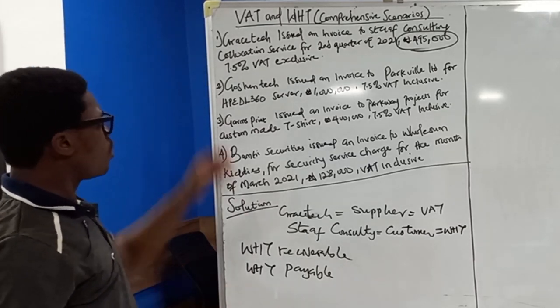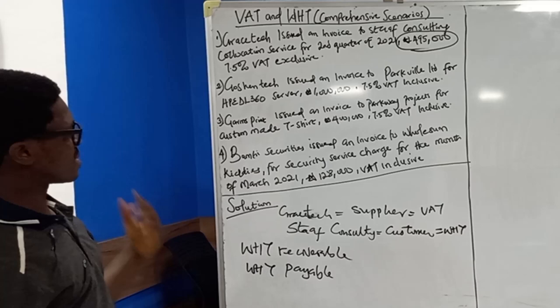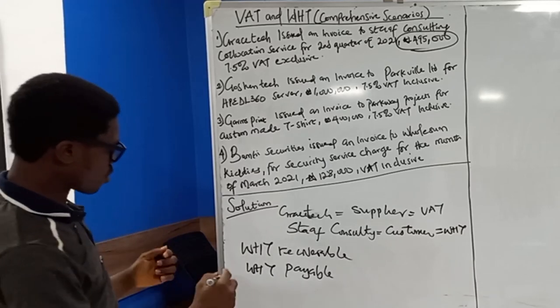Withholding tax recoverable will be opened in the books of the supplier. Why? Because the withholding tax has been deducted from the transaction. At the end of the year, the supplier will use it to defray the tax liability. The withholding tax payable will be credited by the customer pending when the withholding tax will be remitted to the tax authority. Now, looking at this question, the first thing we ask ourselves is what is the contract sum?